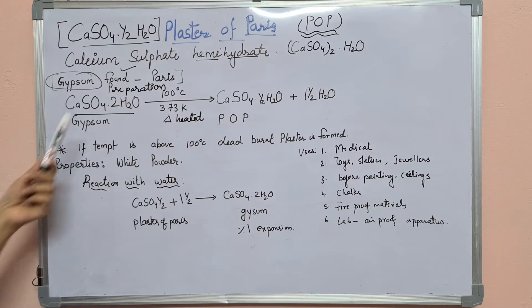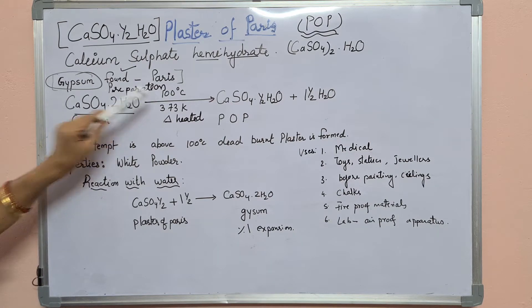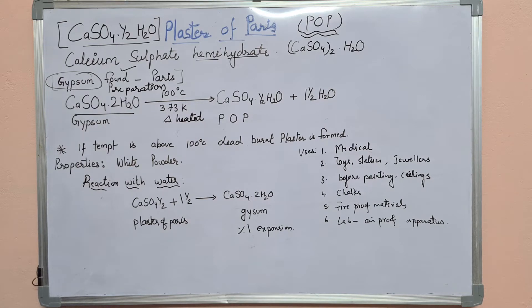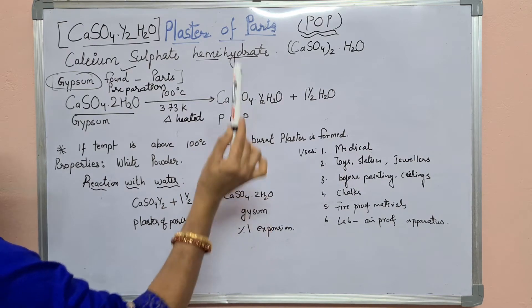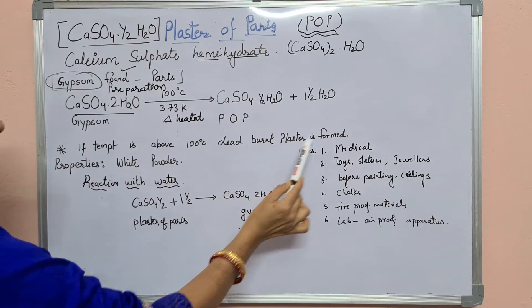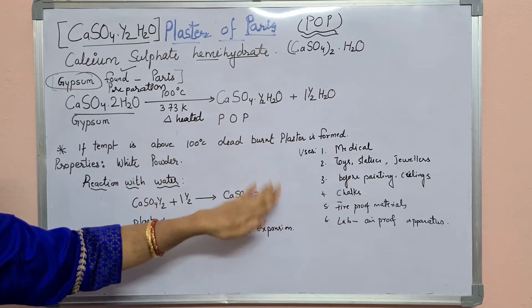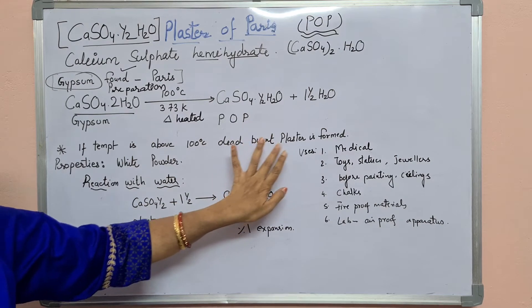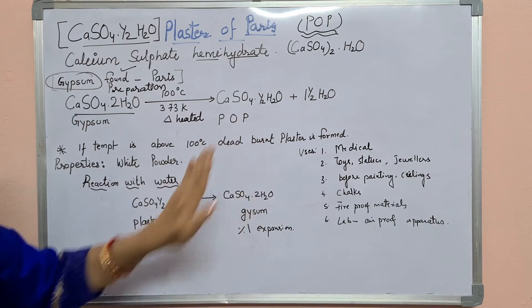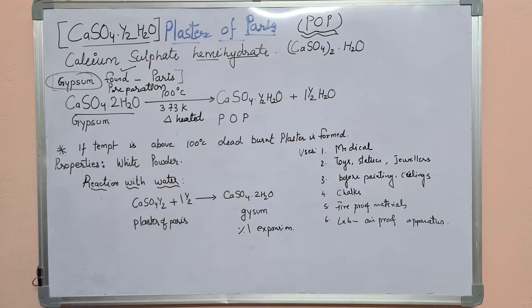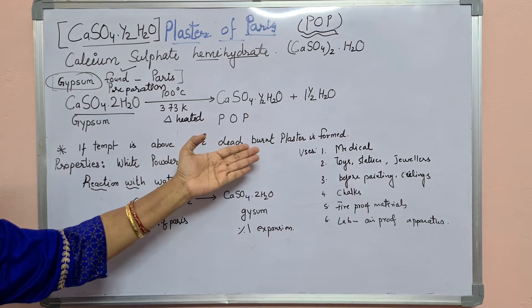In this reaction, the temperature should be 100°C. Temperature should not exceed 100°C. If the temperature is above 100°C, plaster of Paris is converted into dead burned plaster. This half water molecule is also removed, and it is converted into anhydrous CaSO4. That is called dead burned plaster.